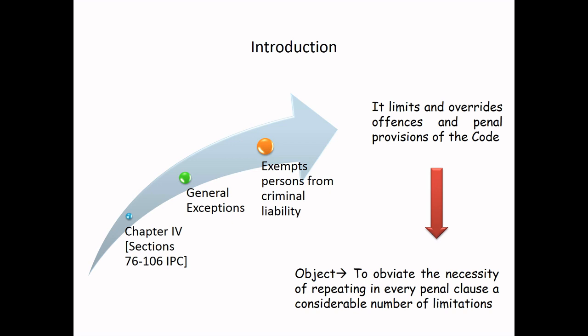Chapter 4 has enumerated several such instances and hence it exempts persons from criminal liability. It is to be noted here that all these exceptions, starting from section 76 to 106, override the offenses which are stated in the code, which means that they should run as exceptions to each of the provisions provided in the statute. And in order to obviate such repetitions, they had come up with a separate general exceptions chapter which in fact limits and overrides all the provisions of the code.